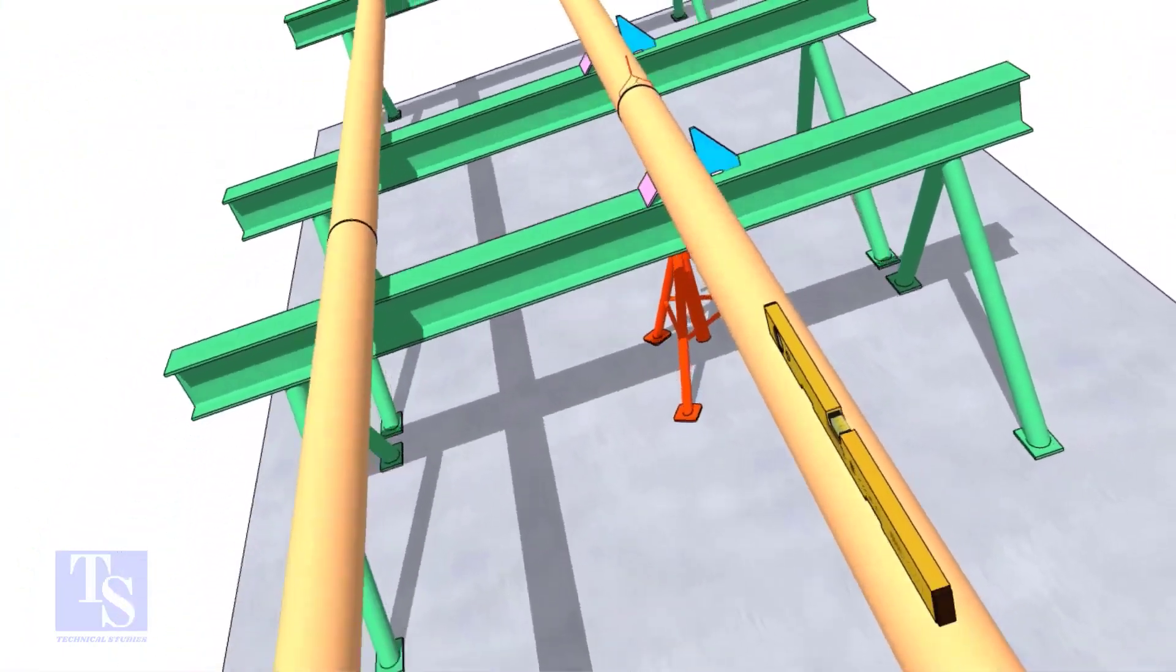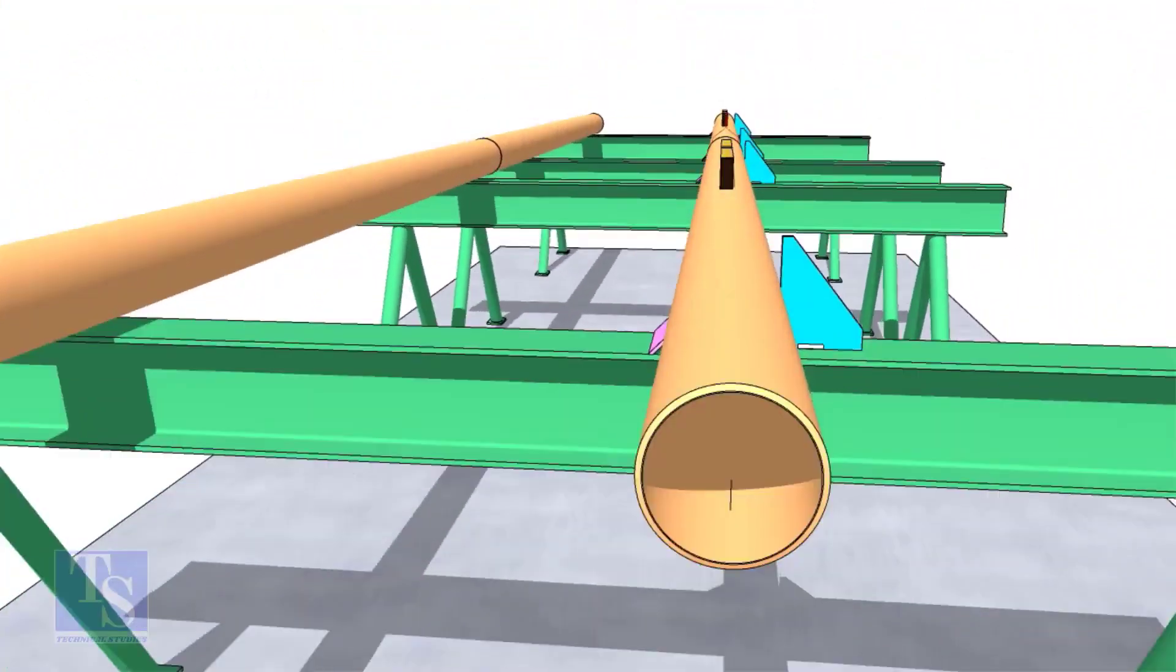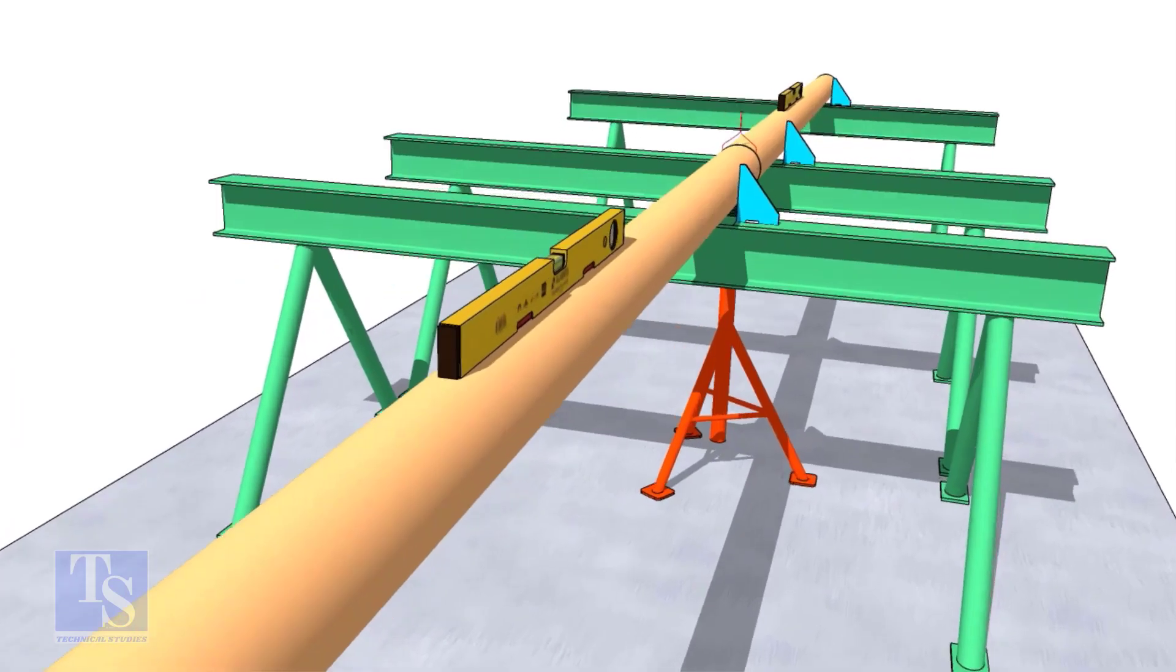Check the straightness of the pipes by looking from one end of the pipes. This is the best way to check the straightness.